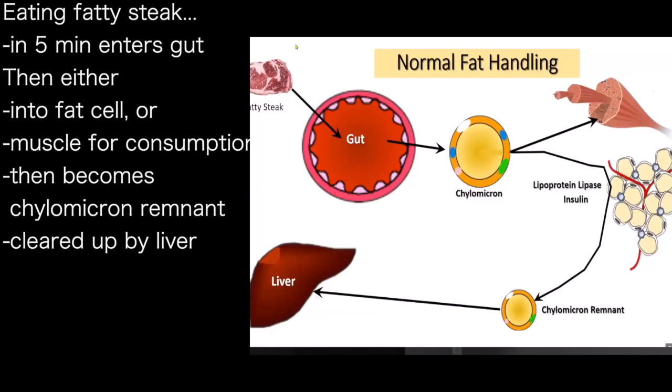So this fat-filled globule becomes smaller. It's called a remnant, and that's cleared up by the liver.